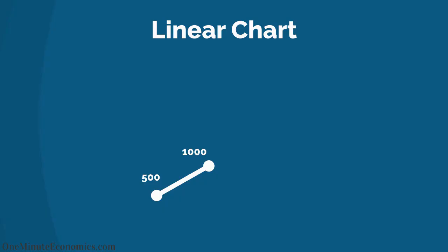On a linear chart, the 1000 to 2000 line would be two times longer, and as numbers keep going up, interpreting linear charts becomes harder.